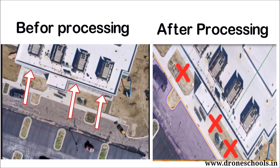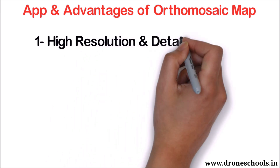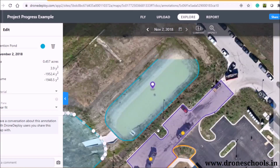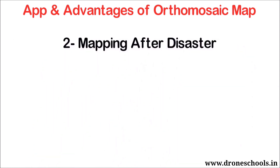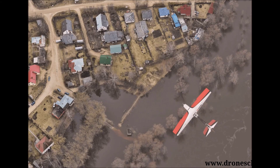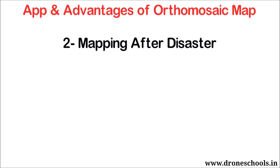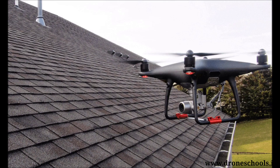The first advantage of Orthomosaic is that it is a high-resolution and detailed image, which helps the surveyor to accurately measure distance, area, and volume. The second most common advantage is mapping after a disaster — Orthomosaic maps help surveyors measure damage assessment after natural disasters like floods or earthquakes. The third common application is in real estate, where Orthomosaics are great for aerial inspection of equipment and facilities — including rooftops, solar installations, and buildings that have fallen apart.